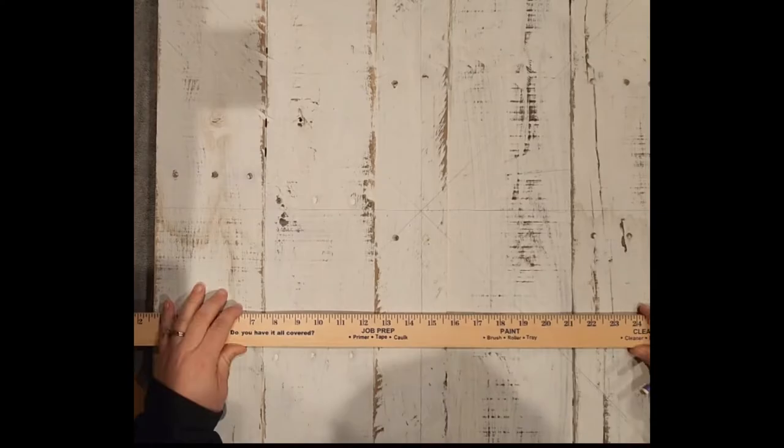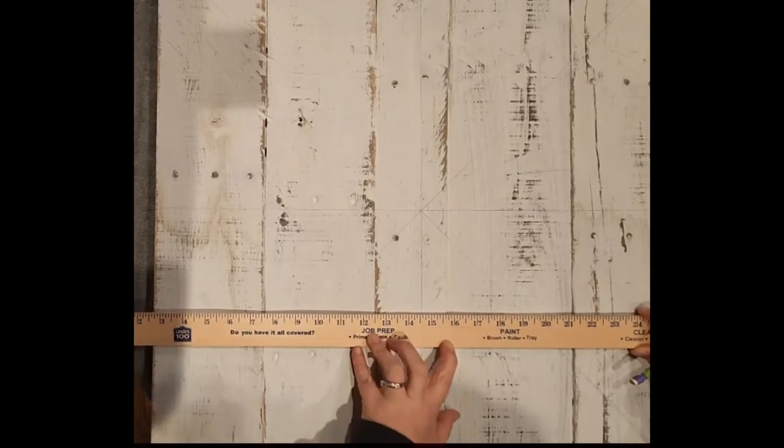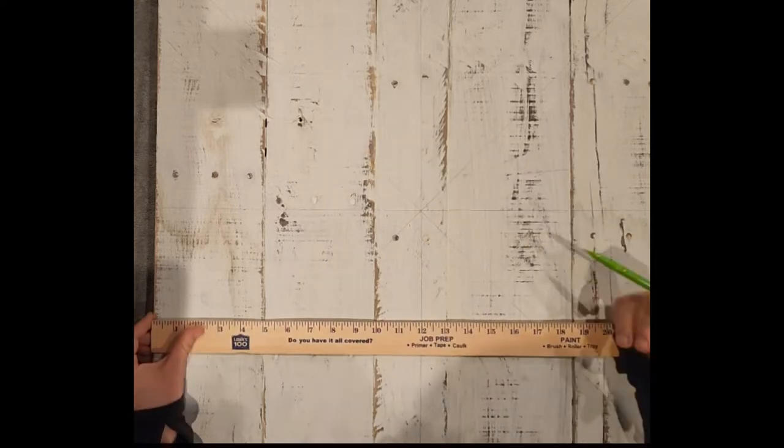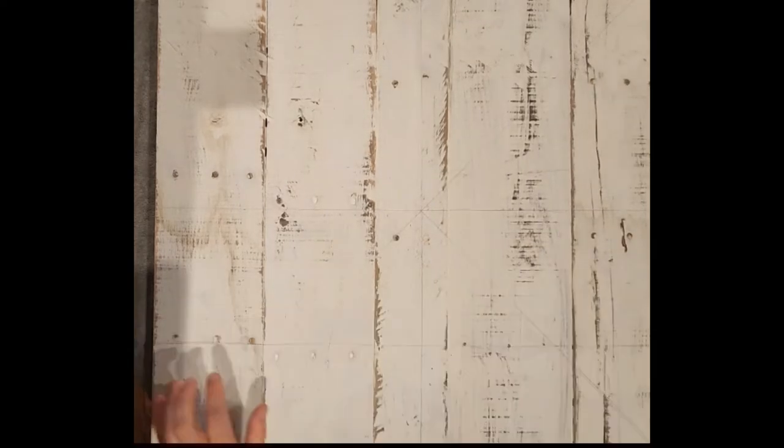Then I turn the board and do the same thing horizontally. The next thing I do is make marks six inches away from the edge of the sign, then make a straight line with the yardstick. I do this on all four sides.